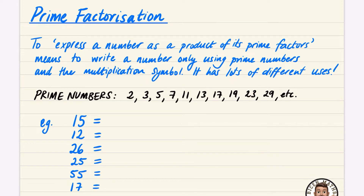We're going to write these numbers using only the list of primes and the multiplication symbol. 15 can only be written as 3 times 5 — I'll write the smallest numbers first. For 12, I can break it down as 6 times 2, and since 6 is 2 times 3, that gives 2 times 3 times 2. But I'd write it in order as 2 times 2 times 3.